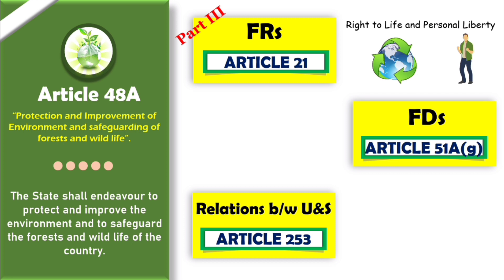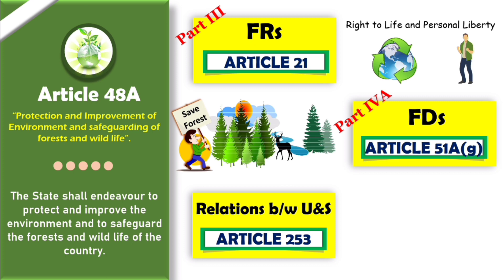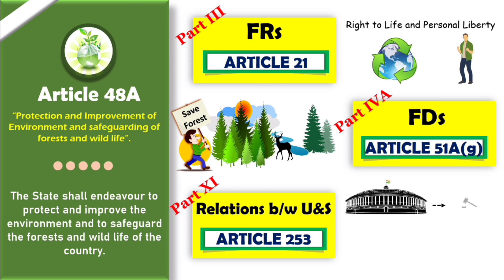Article 51A(g), which lies under Part 4A of the Indian Constitution as a fundamental duty, says that it shall be the duty of every citizen of India to protect and improve the natural environment including forests, lakes, rivers, and wildlife, and to have compassion for living creatures. Article 253, which lies under Part 11 of the Indian Constitution, talks about legislation for giving effect to international agreements. This article says Parliament has the power to make any law for implementing any treaty, agreement, or convention with any other country, or any decision made at any international conference, association, or other body.